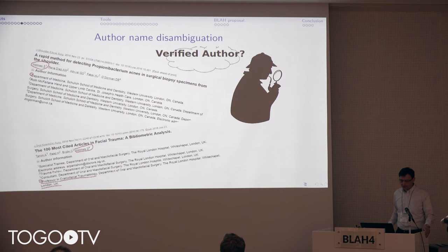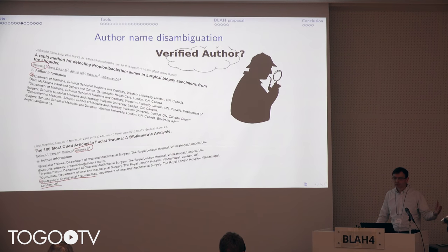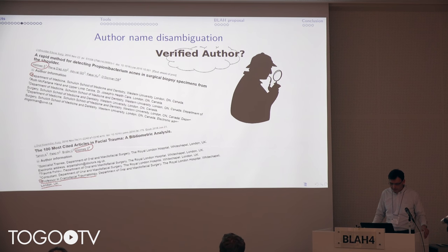In another project, a collaboration with a pharma company, we are looking at the disambiguation of author names. People move from one institution to another, so it might not be obvious that one Holmes is the same as another Holmes. Sometimes the institution is not mentioned in the paper, or it has changed because the person has moved.